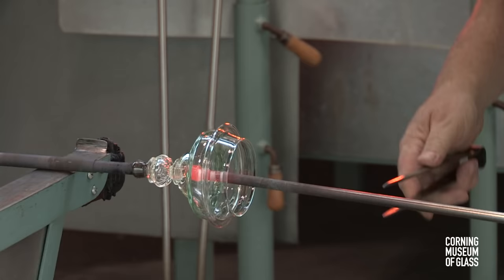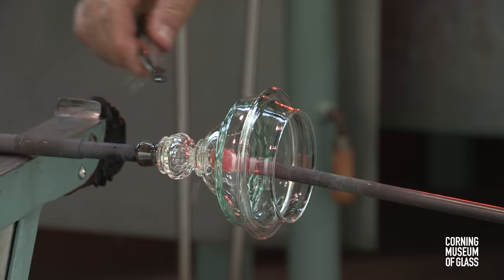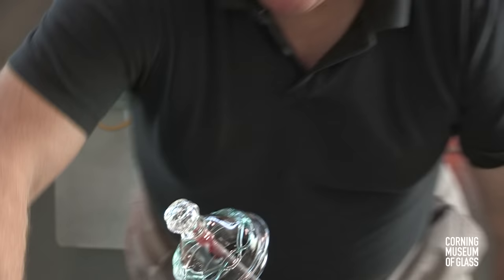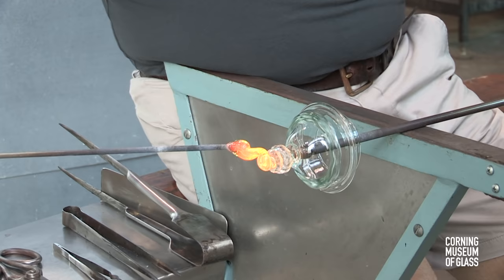Lastly, a punty is added, the first punty broken free, and the finial is made. The finial is completed by adding a small amount of glass and tooling it to the proper shape.